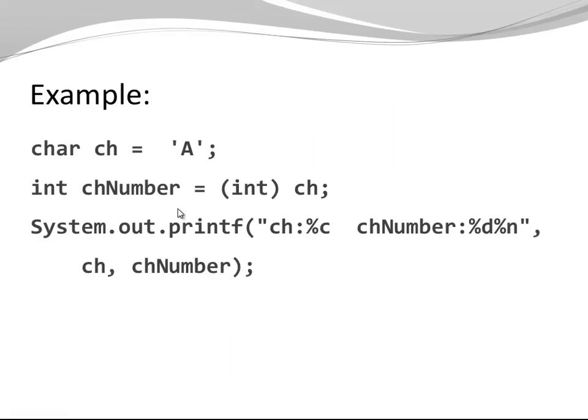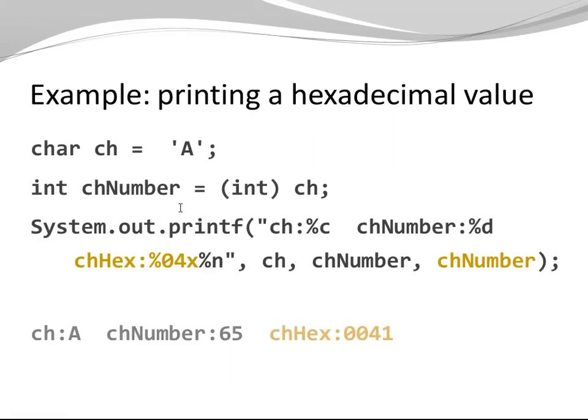Once again, I'm using the same example. I'm expanding it a little bit by printing the hexadecimal value. Notice, I added another label and a format specifier, %04X. Notice, I'm passing once again the very same variable that I passed before.